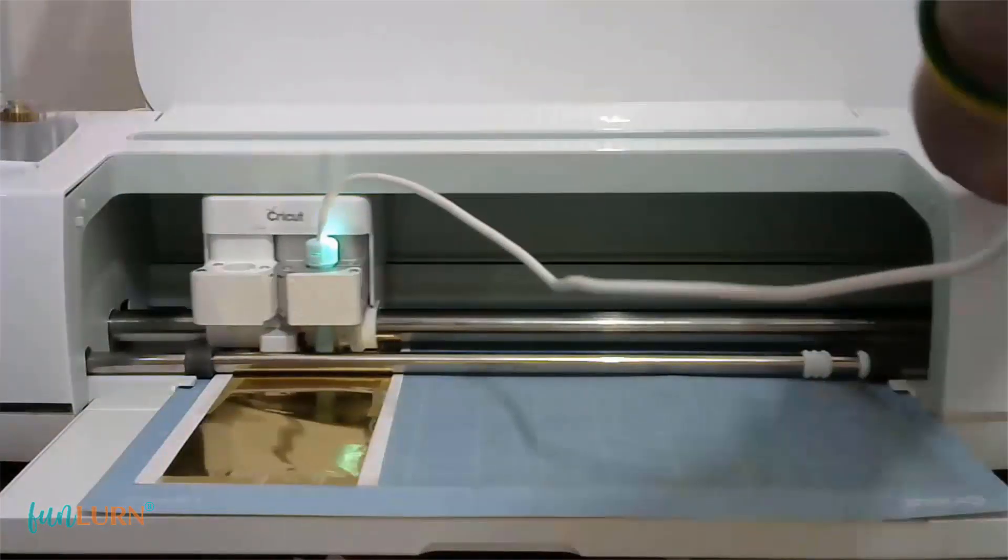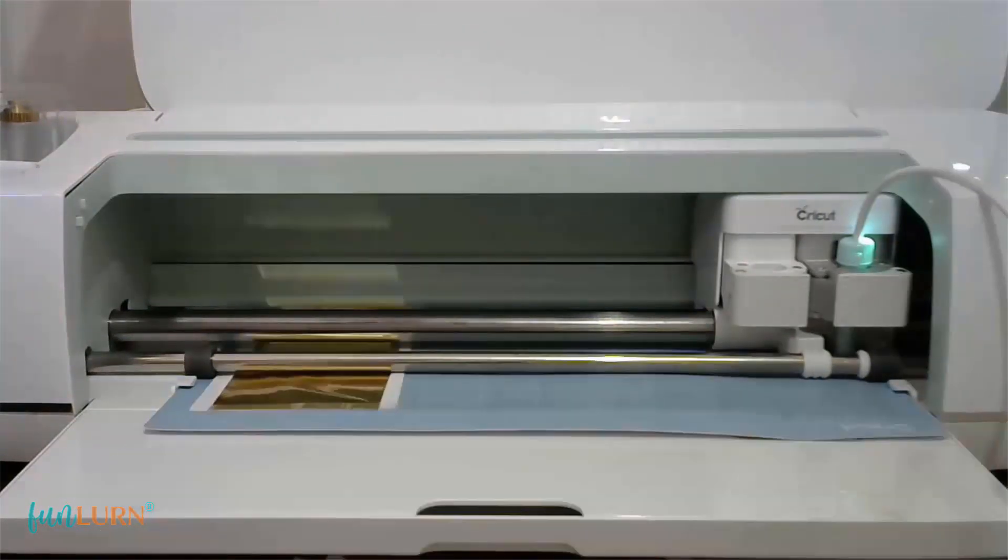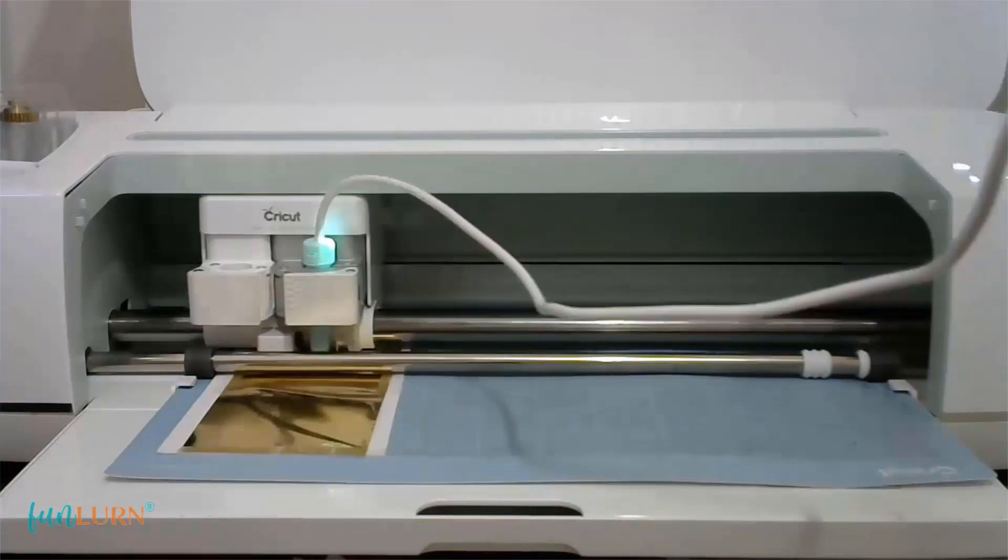I made sure that it was snug and I clicked the C button again. This time the foiling worked perfectly.